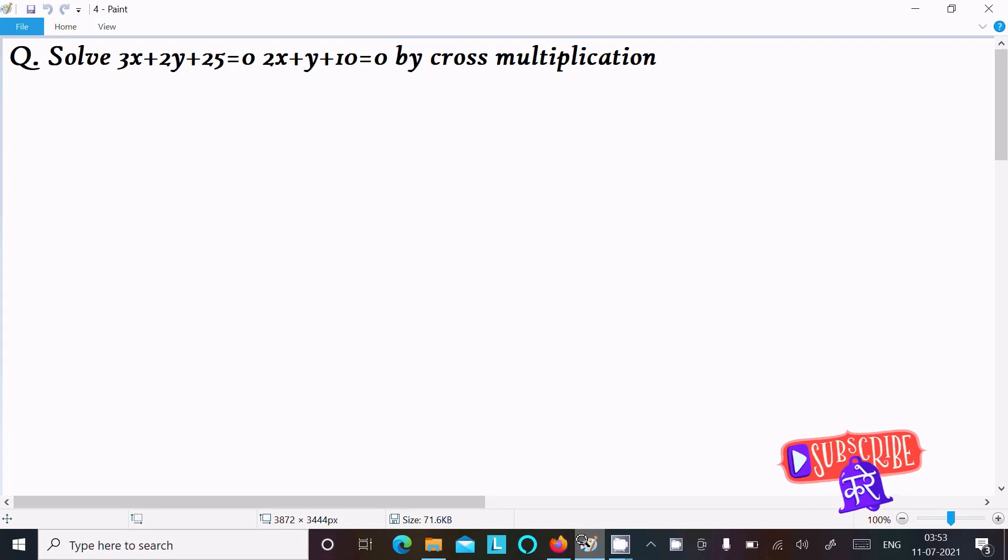I am going to solve this equation by using cross multiplication. First, I'll write the equation: 3x plus 2y plus 25 equal to 0.